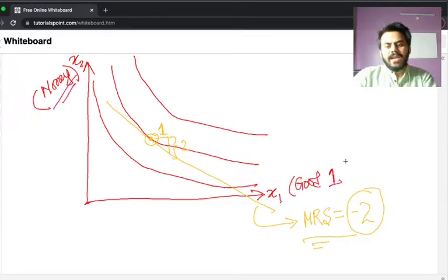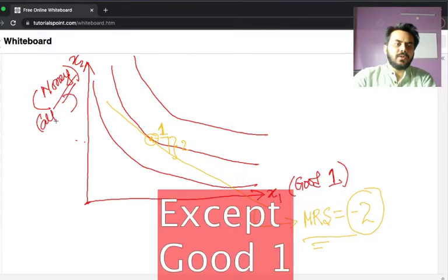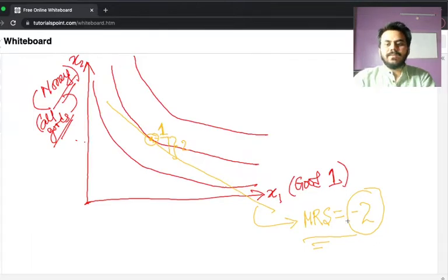So this is my good one and the rest of the money is spent on all the other goods. This is spent on all goods. So what does MRS mean in this case?